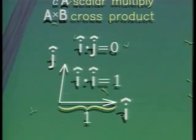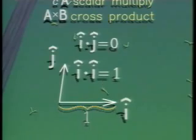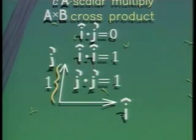Vector algebra makes use of two perpendicular unit vectors, i and j. The little hat over the vector means that it has length one.